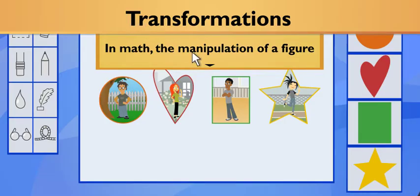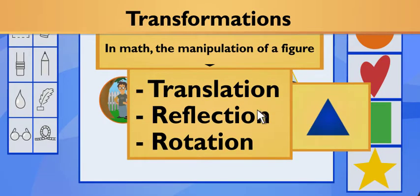Three of the different ways you can transform a shape are translation, reflection, or rotation. In that case, a few transformations sound like exactly what this collage needs.